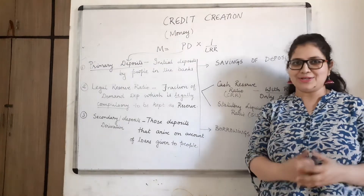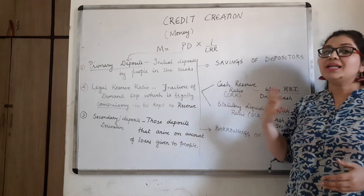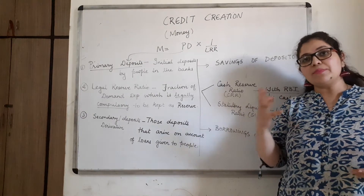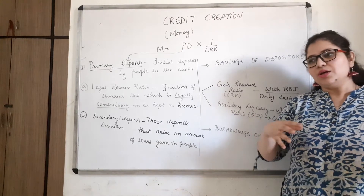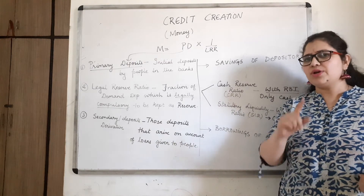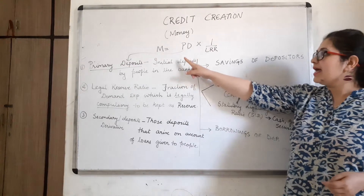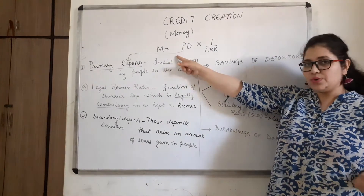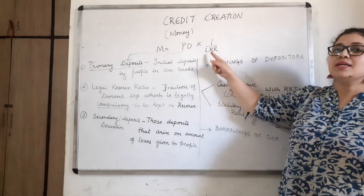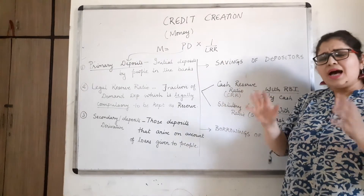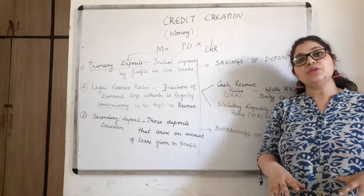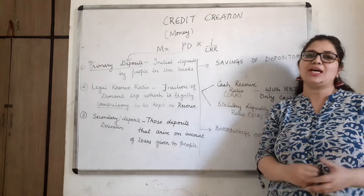So let's begin this topic today. Credit creation or money creation is the process by which banks multiply their money. Banks multiply the money they have — there are certain processes through which they can increase their money. To do this, they use a formula: M (money multiplier) = PD (primary deposits) × 1/LRR, where LRR is the Legal Reserve Ratio. Before understanding credit creation, we need to understand all these terms.